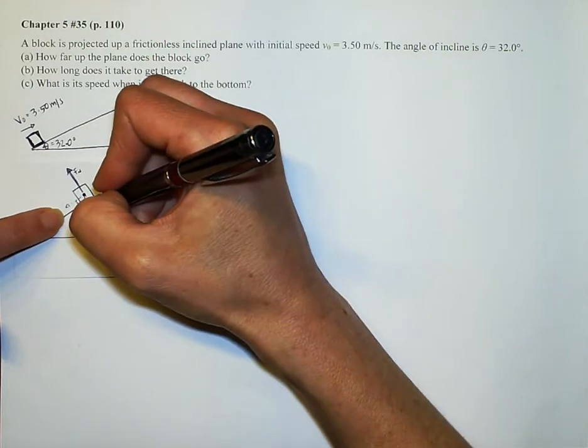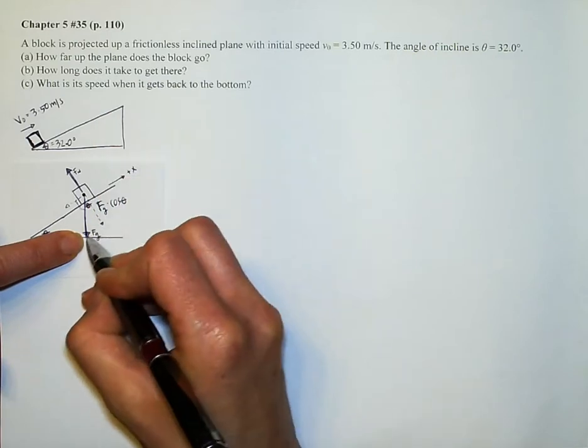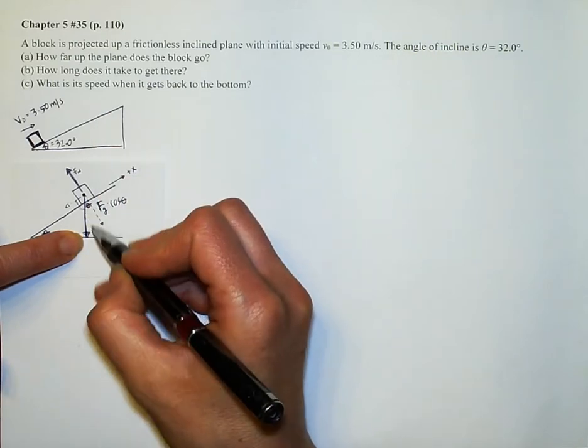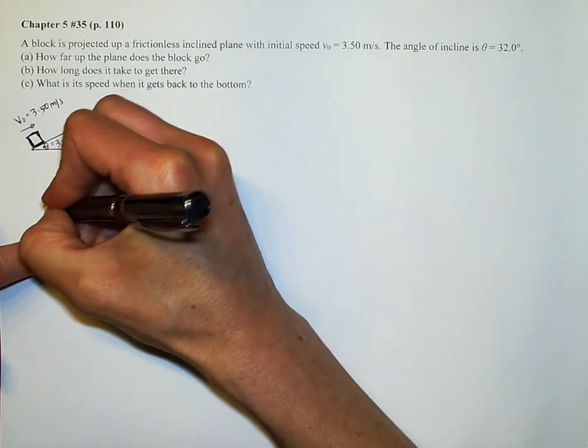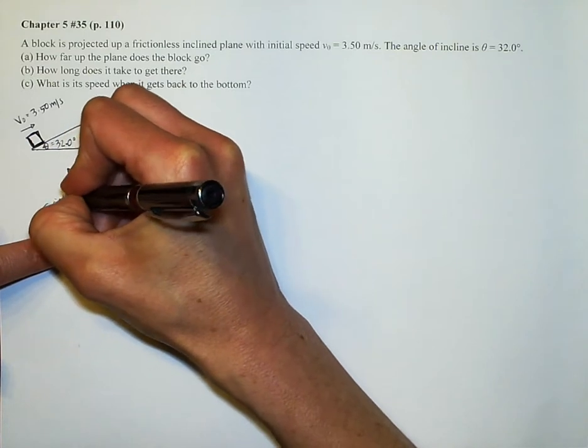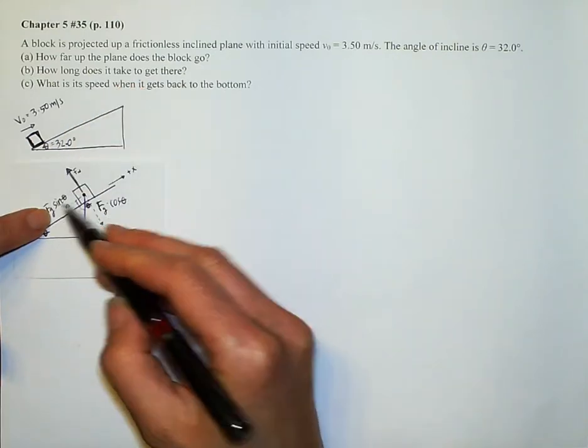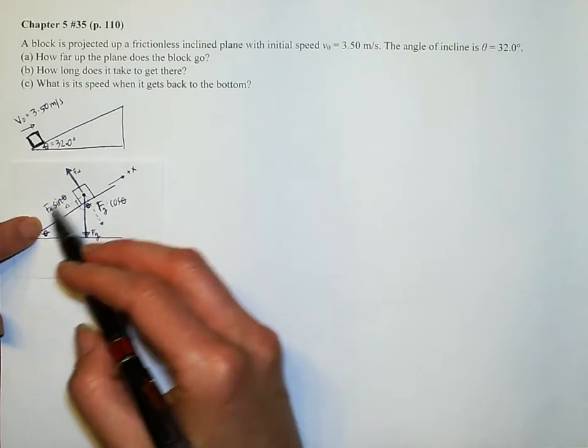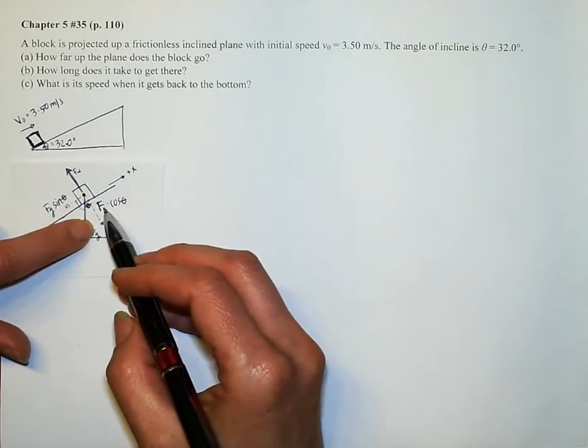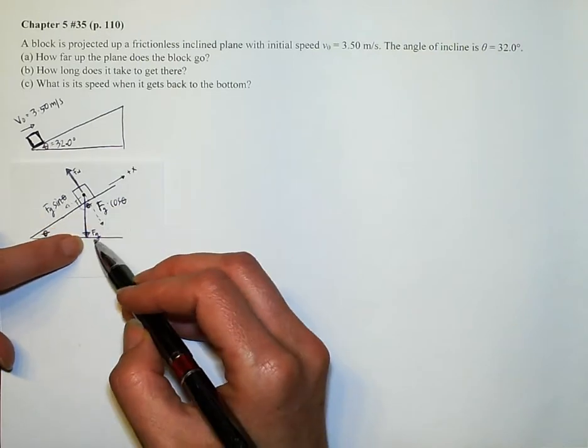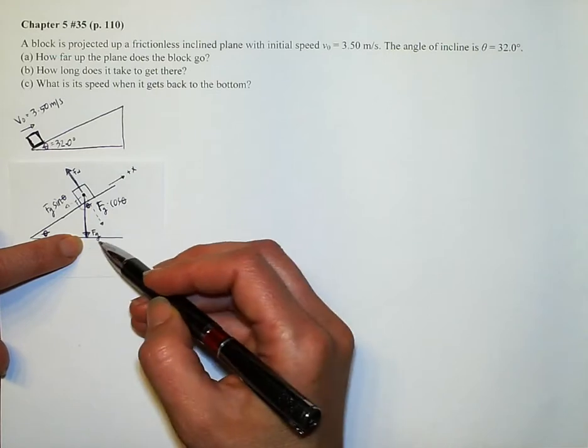Which tells us that this component of our force would be our force due to gravity times cosine theta. And over here, it would be the force due to gravity sine theta. These are components we often write as mg sine theta and mg cosine theta because the force due to gravity is mass times gravity.